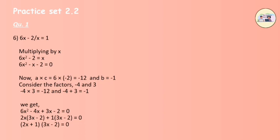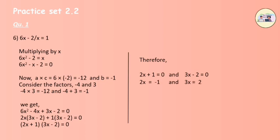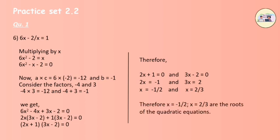After solving separately, we get the value of x for the first equation as minus 1 by 2 and 2 by 3. Therefore, x equals to minus 1 by 2 and 2 by 3 is the solution.